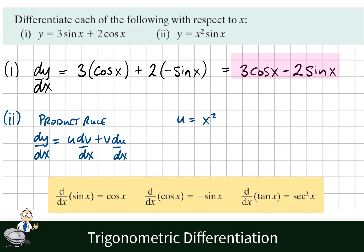So we'll let u be x squared. The derivative of x squared is 2x. Multiply by the power and reduce the power by 1. V is equal to sin x. The derivative of sin x is cos x.